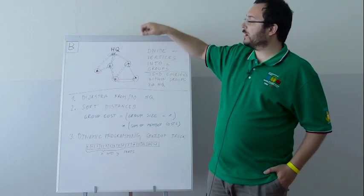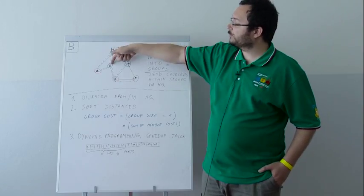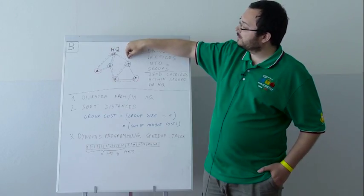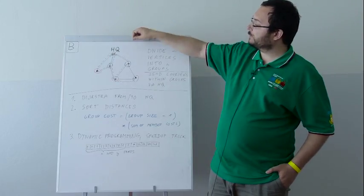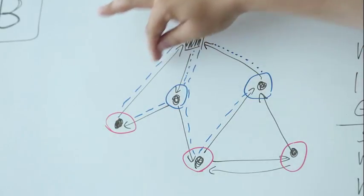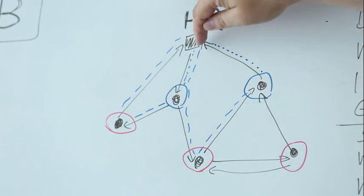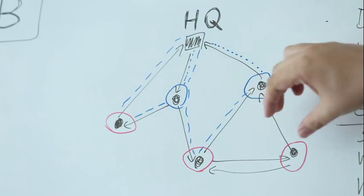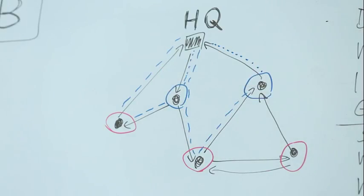The graph is directed, so those two paths can be different. For instance, for these two blue vertices, one of them sends a message like this here and there, and the other sends a message like this — first it has to reach headquarters, then it has to reach the other vertex. All of the edges have different lengths, and what we are looking for is a division of all the vertices into exactly S groups that minimizes the total length of the courier paths.